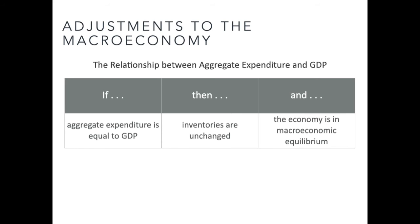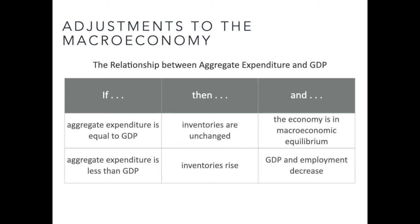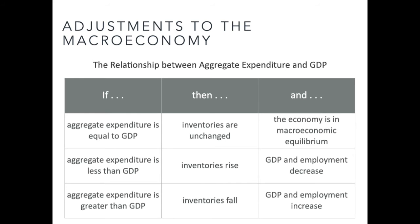If aggregate expenditure is equal to GDP, then inventories are unchanged and the economy is in macroeconomic equilibrium. If aggregate expenditure is less than GDP, then inventories rise and GDP and employment decrease. If aggregate expenditure is greater than GDP, inventories fall and GDP and employment rise.